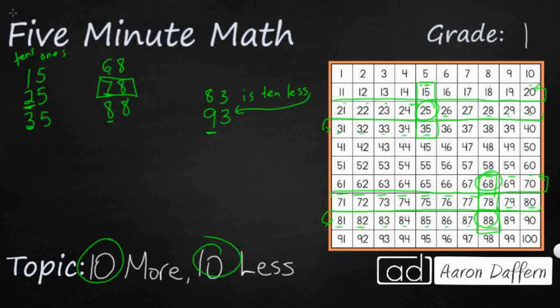Now, how do I make it 10 more? Well, I'm going to keep my ones digit the same, but what is one more than nine? Well, if I go one more than nine, it's actually 10, and 10 isn't a digit. 10 is a number made up of two digits, one and zero.